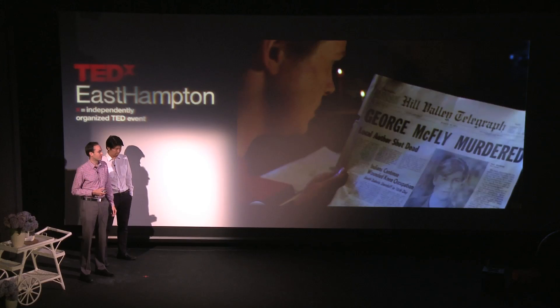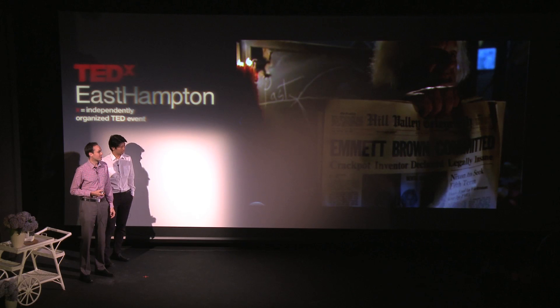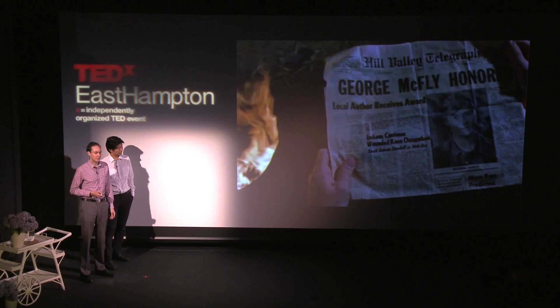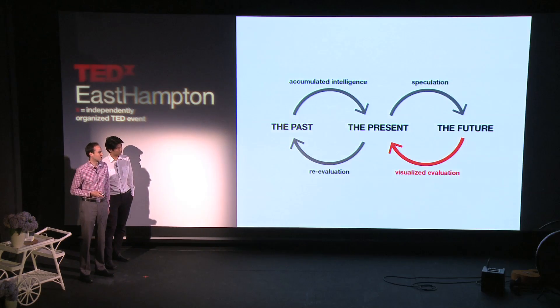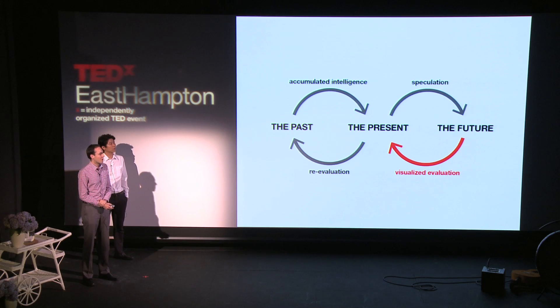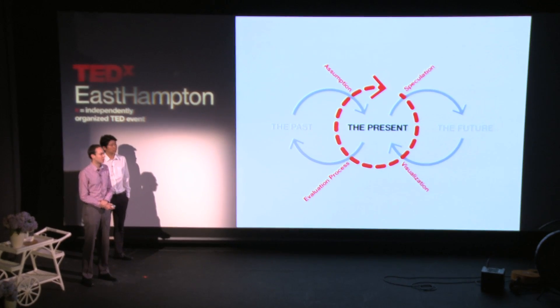Throughout this presentation we'll use fictional devices such as time travel and magical realism to set the framework for a world in which we're speculating different visions of the future. Like Marty McFly in Back to the Future, who travels to the future and sees the consequences of his actions, they develop a cyclical understanding about the relationship between the past, the present, and the future, learning from their mistakes to change their future. We want to create a similar dialogue — based on speculations about the future, we create a visualized evaluation that helps us change our actions in the present.